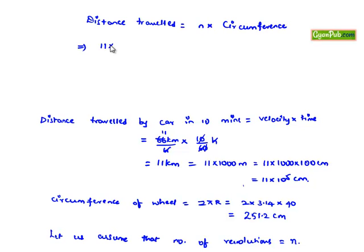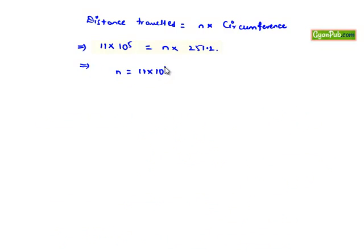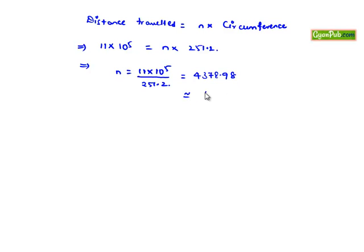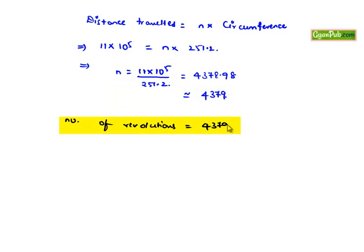This implies 11 times 10 power 5 cm is equal to n times 251.2 cm. That implies n is equal to 11 into 10 power 5 divided by 251.2, that is equal to 4378.98, which is approximately equal to 4379 revolutions. Therefore, the number of revolutions made by the wheel is equal to 4379.